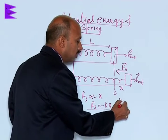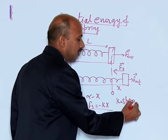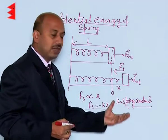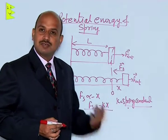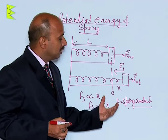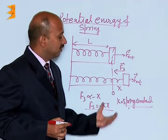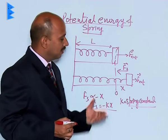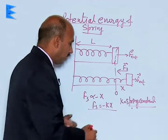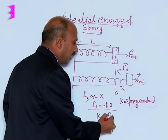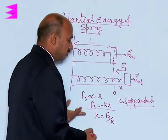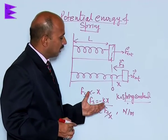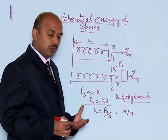Here k is called the spring constant. The larger the value of k, the stiffer the spring. So k determines the stiffness of the spring — if k is small, stiffness is less; if k is large, stiffness is more. We can also write k = Fs / x, so its unit is obviously Newton per meter. This covers the spring constant and the restoring force.